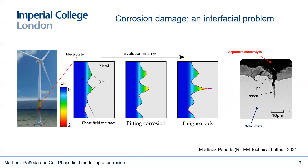The electrolyte-solid interface is one with a very complex morphology, and that evolves based on a combination of chemical and mechanical factors. For example, you can see here the different stages of the corrosion fatigue process in an offshore wind turbine monopile. First, you have pits nucleating at the seawater-steel interface. Then those pits grow, driven by local chemistry and mechanics. And eventually we observe a pit-to-crack transition when a critical combination of local chemistry and mechanical fields is reached. And this is followed by the propagation of cracks. So what a complex evolution of the interface morphology.